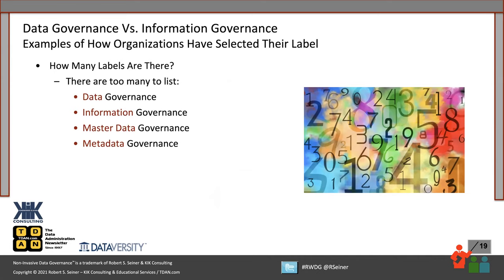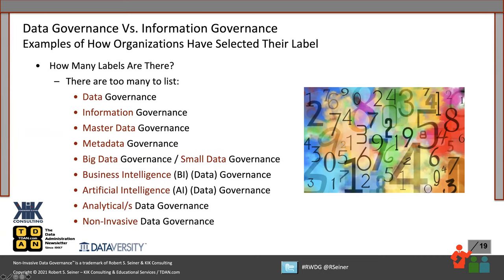There's the obvious ones: data governance and information governance — the latter may or may not include unstructured data. Another expression I hear more often is master data governance — we're focusing on the governance of master data. But by adding the name master in front and calling it master data governance, what does that imply to the organization? That you're only governing your master data? The same thing holds true for metadata governance — if you call your program metadata governance, that may be the only thing people think you're focusing on. So what are some of the other labels?